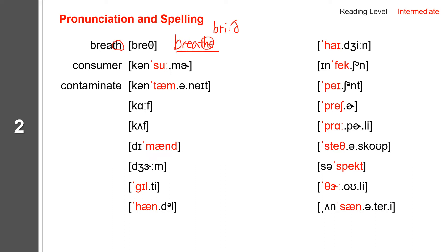And next one: cough. Cough spells C-O-U-G-H. Cough. And next one: cuff. Cuff spells C-U-F-F. Cuff. Next one: demand. Demand spells D-E-M-A-N-D. Demand. Next one: germ. Germ spells G-E-R-M. Germ.